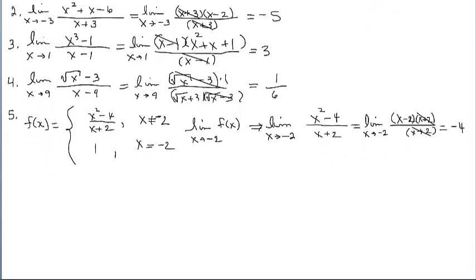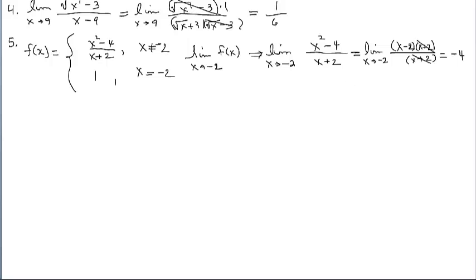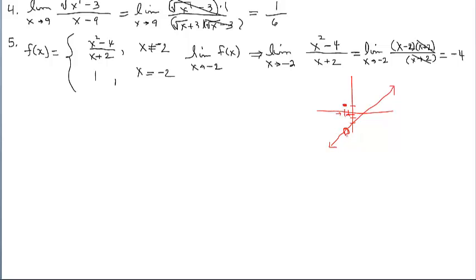Looking at the graph: when we graph the top piece, we know it's a linear function with a y-intercept of negative 2, but it has a point discontinuity at negative 2 — that's where the hole is. If we completely graph this piecewise function, the bottom piece gives us the point negative 2, 1, which we plot separately. The limit still does exist as we approach negative 2 from both sides, and it is negative 4 — that's the coordinate of the hole on that linear function.